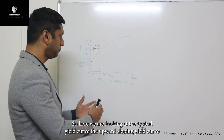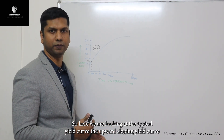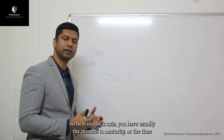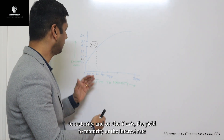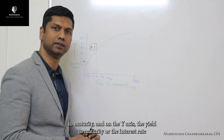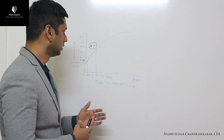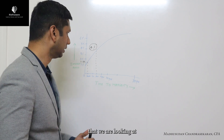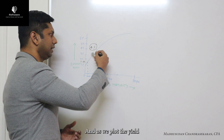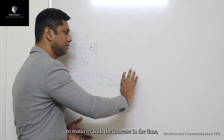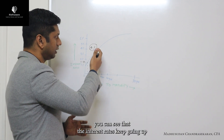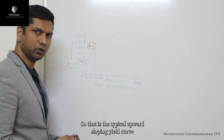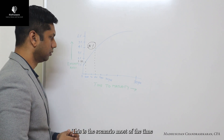Here we are looking at the typical upward sloping yield curve. On the x-axis you have the months to maturity or time to maturity, and on the y-axis the yield to maturity or interest rate. Let's assume this is some kind of a government bond instrument. As we plot the yield to maturity with increasing time, you can see that interest rates keep going up — that is the typical upward sloping yield curve, and this is the scenario most of the time.